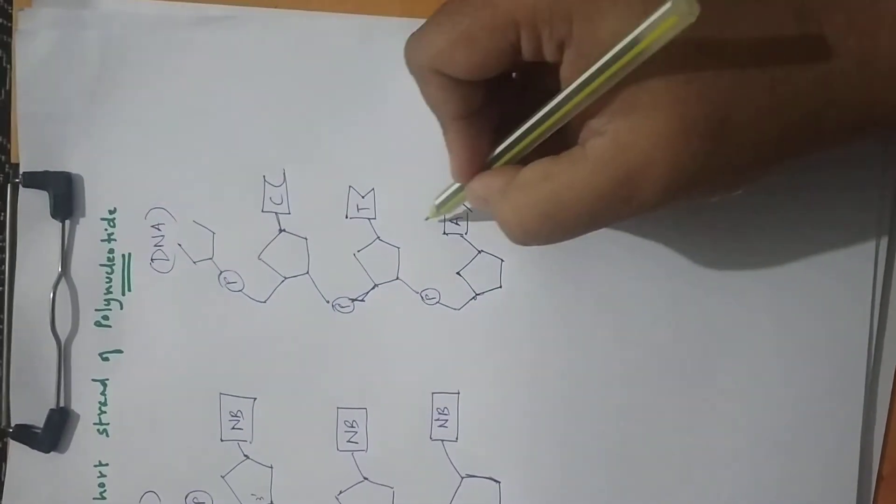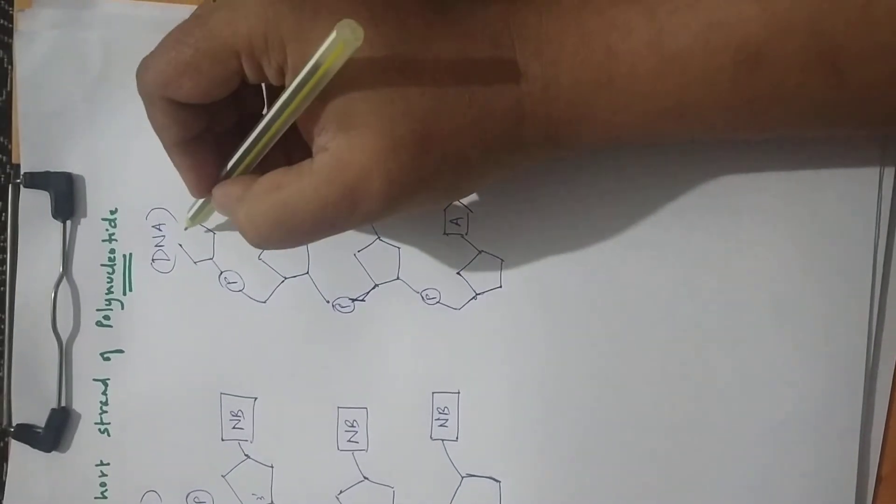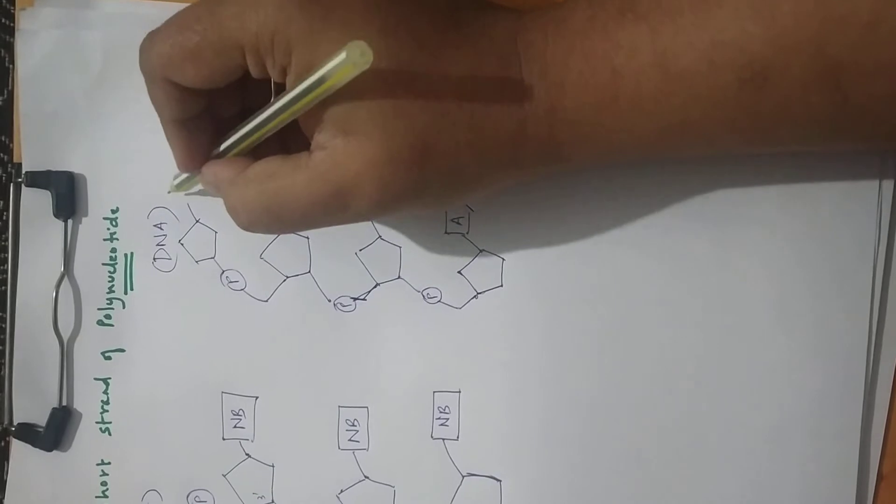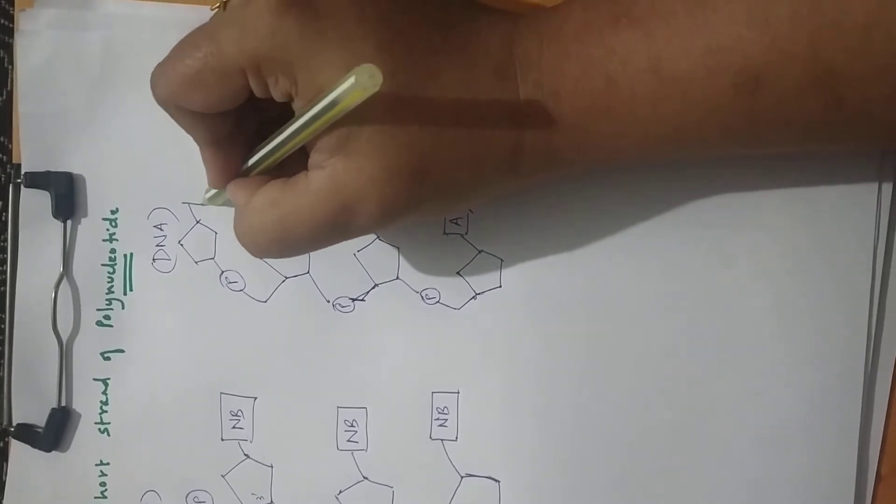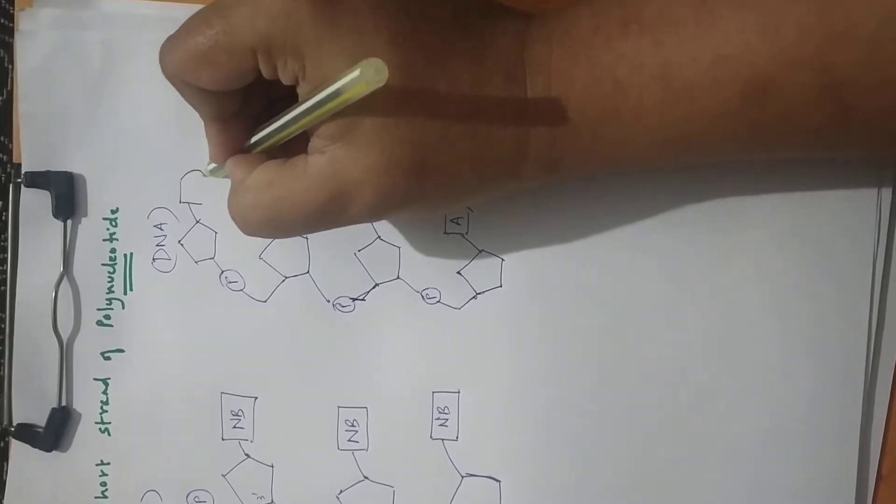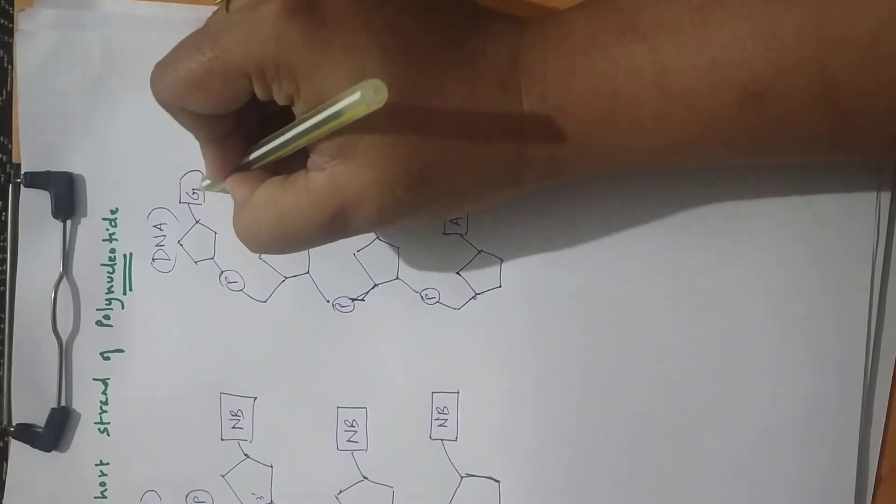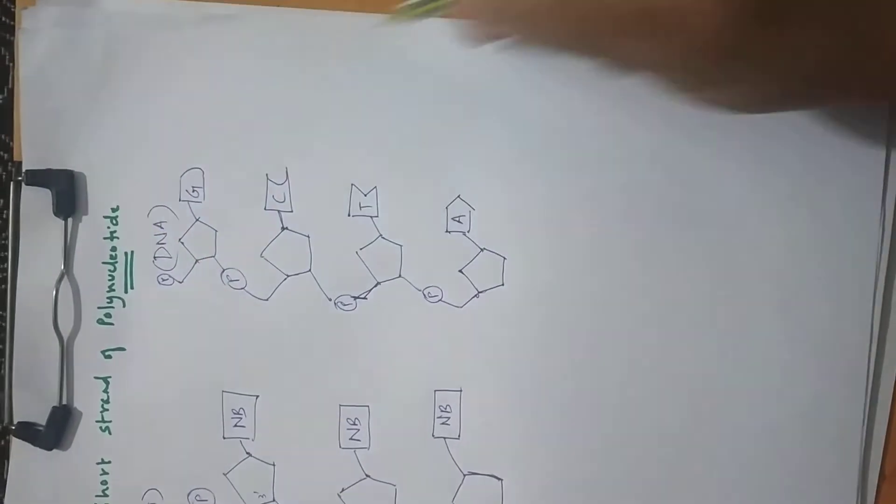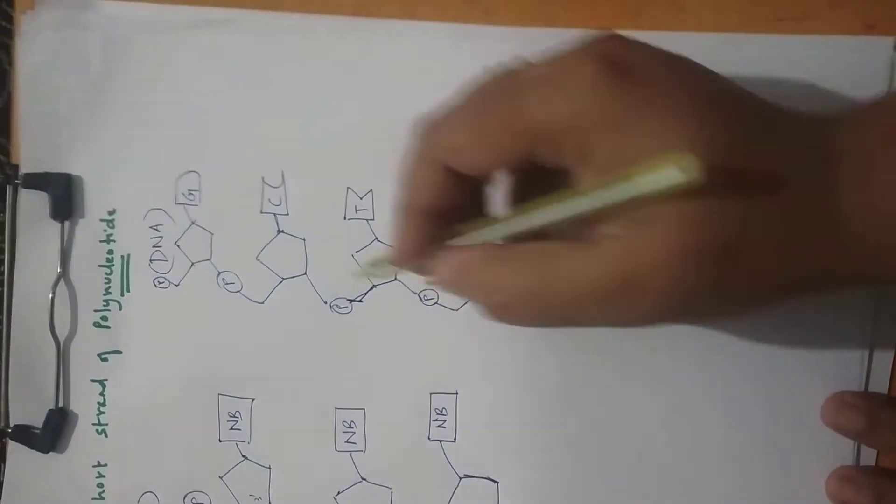So this sequence A, T, C, G, whatever you want, you can keep. It's a random sequence. Let's say this is a G, guanine, and so on. You can continue drawing the phosphates. So this is one strand.